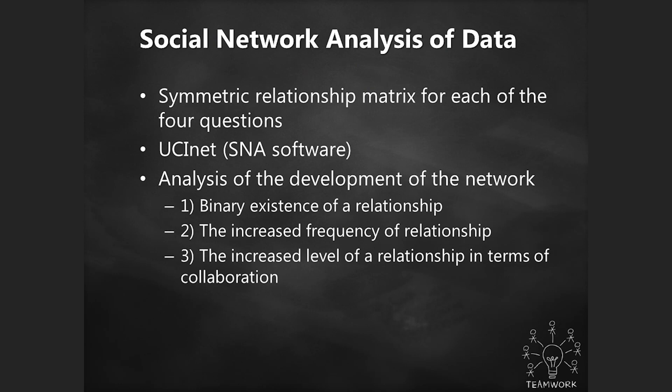We created a symmetric relationship matrix for each of the four questions — if I said I knew someone, did they say they knew me? We looked at a lot of dyads and reciprocity. We used UCI Net social network analysis software. Just like you have NVivo for qualitative analysis and SPSS for quantitative analysis, you have UCI Net for social network analysis — you can also do it in R. We looked at the analysis of the development of the network, the binary existence of a relationship, the increased frequency of a relationship, and the increased level of relationship in terms of collaboration.